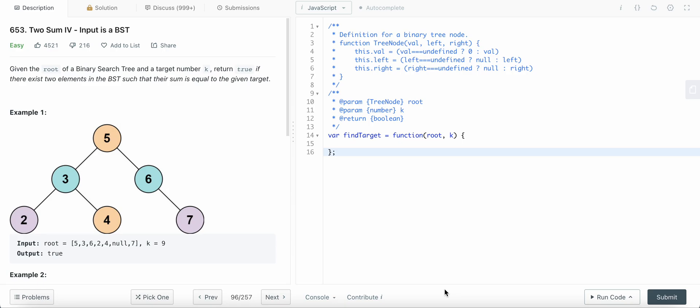Today I am solving LeetCode problem number 653, two sum for the input is in a binary search tree. It is almost like the two sum problem which is in the form of array.